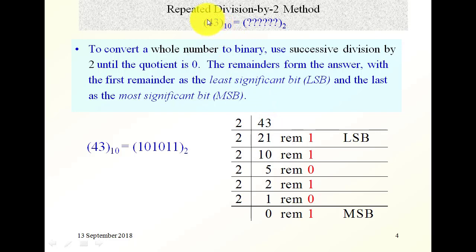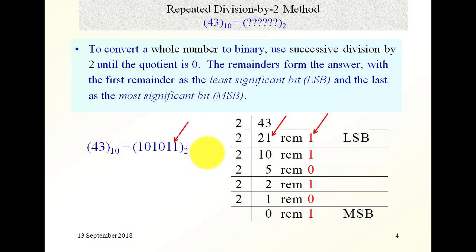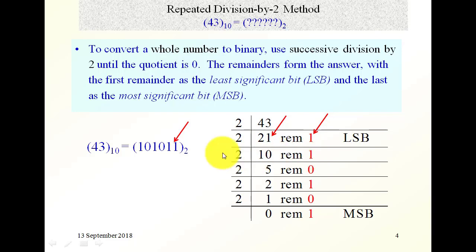For the whole part, we do repeated division by the new base, which is in this case 2. We want to convert this decimal number into binary. First, we divide the number by the new base, and we get a result of 21 with a remainder of 1. That remainder 1 goes here. We then divide 21 by 2, and we get the result 10 with a remainder of 1. This 1 goes here.